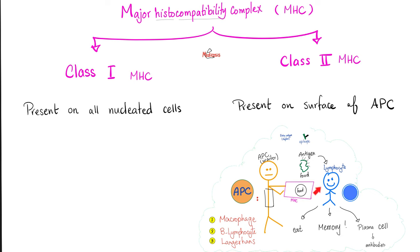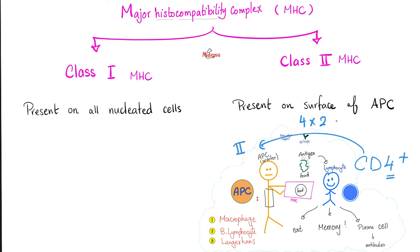Usually, the lymphocyte eating the food from the antigen-presenting cell is CD4 positive. When this is CD4, it's going to interact with MHC class 2, so that 4 times 2 equals 8. How about CD8? CD8 lymphocytes will interact with MHC class 1, so that the product equals 8 as well.